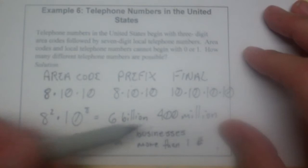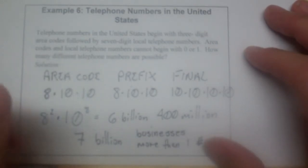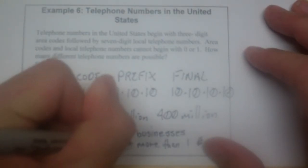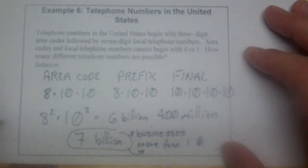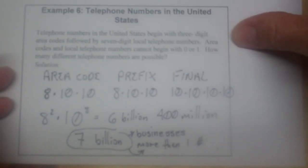So even though six billion, four hundred million is a whole lot of telephone numbers, this number of people. And when you start thinking about businesses and the fact that some people have more than one number, we're going to run out of numbers. We're actually going to have to change either the prefix or the area code to include more and more phone numbers.